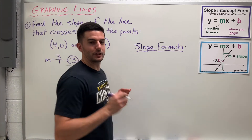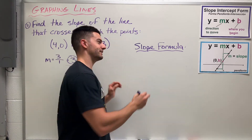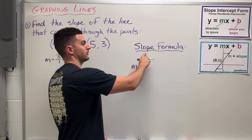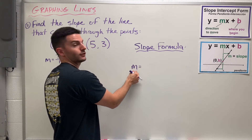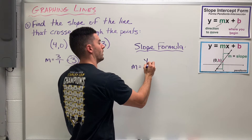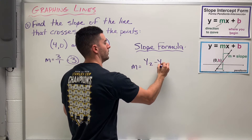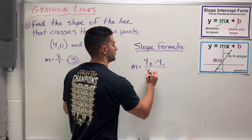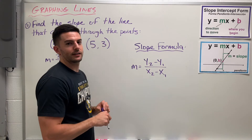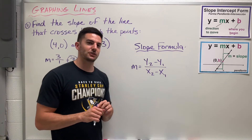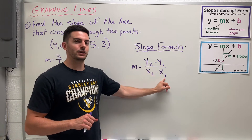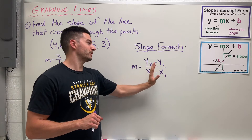So the slope formula — I'm going to draw it. It's actually not that bad. The slope formula is how you can find the slope of something. It is y2 minus y1 over x2 minus x1. That's my slope formula.